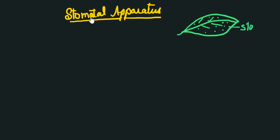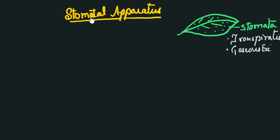These tiny pores are called stomata. The main functions of stomata in plants are transpiration, that is loss of water from the plant, and second, gaseous exchange, which is important for respiration as well as photosynthesis. Now let's see the detailed structure of the stomata.